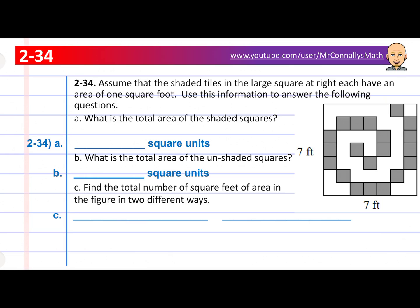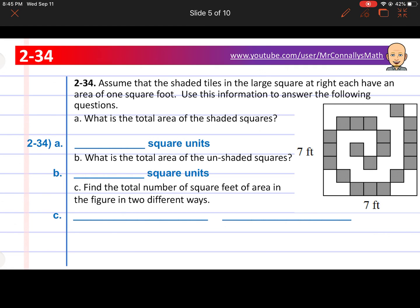Assume that the shaded tiles and large square at right each have an area of one square foot. Use the information to answer the following questions. So it says what is the total area of the shaded squares? So it's going to be something square units for question 34a. Shaded means that they're gray. So let's go ahead and count all the gray ones. Once you get your answer, go ahead and put it in right there.